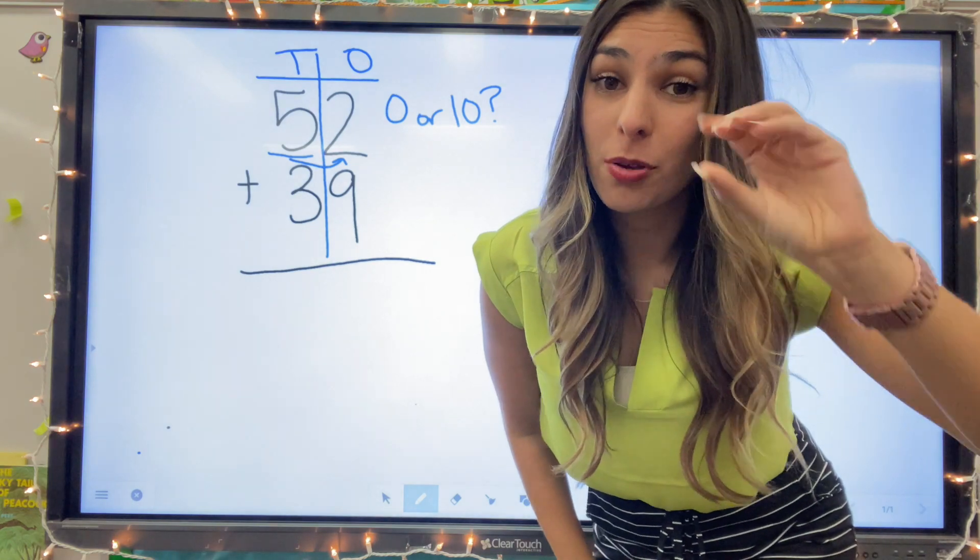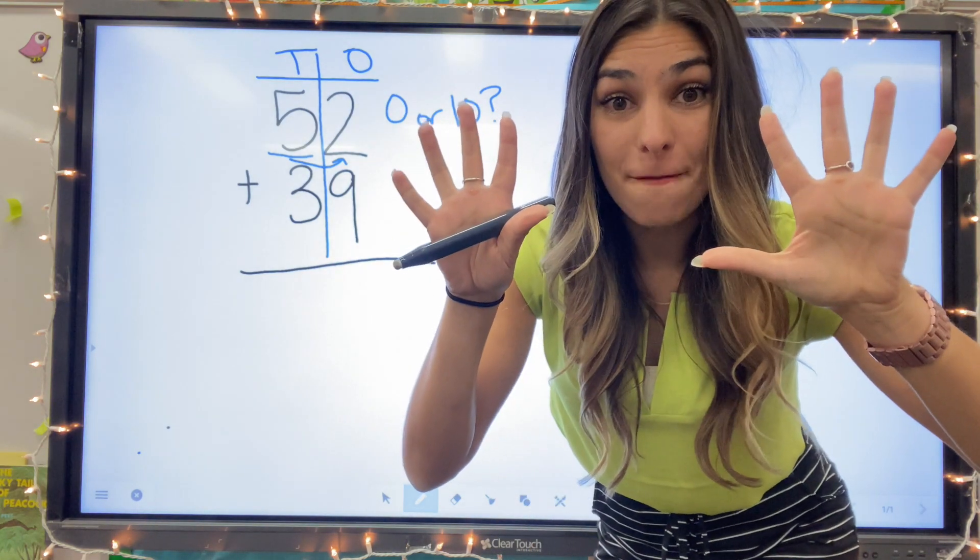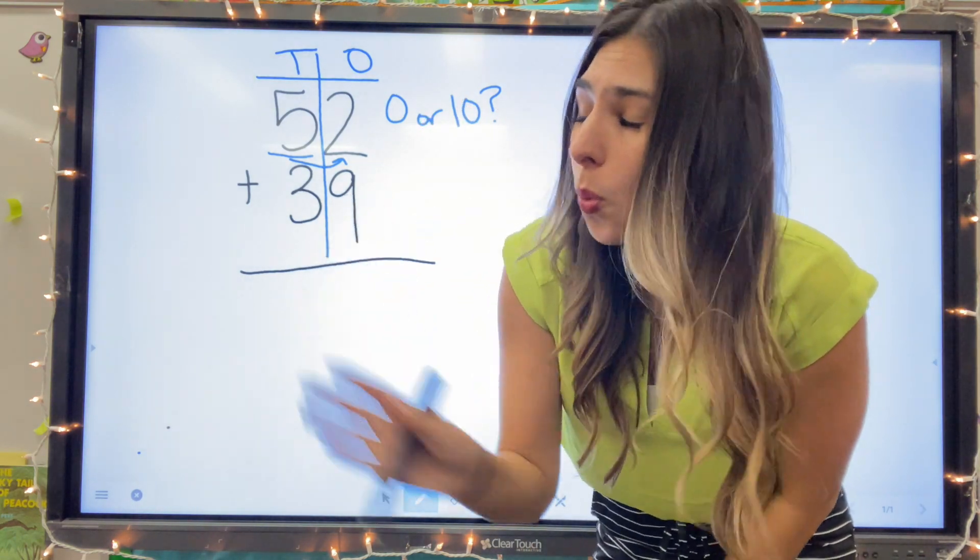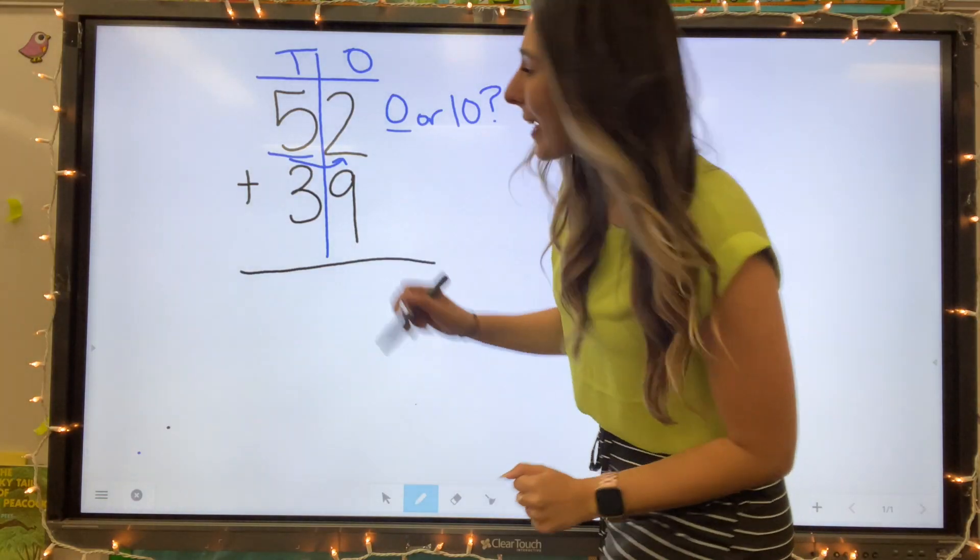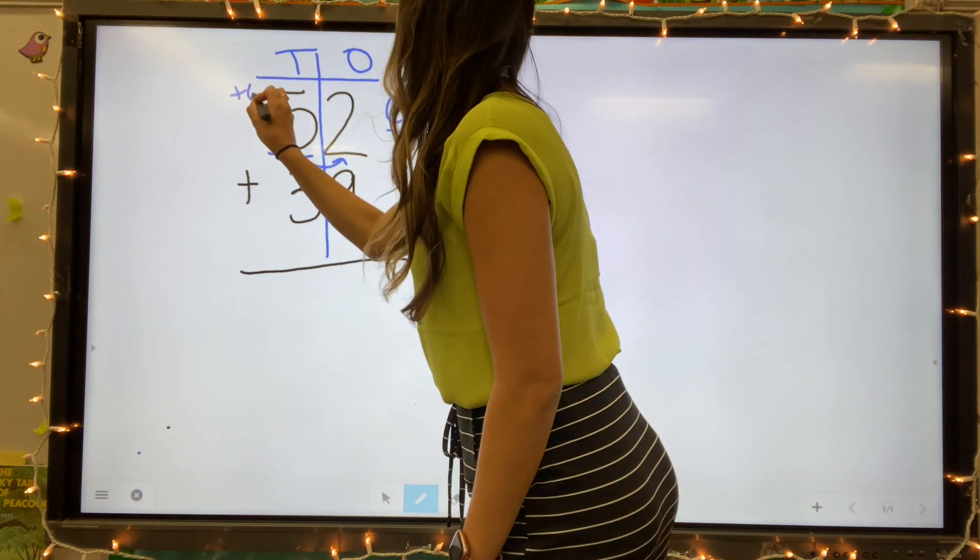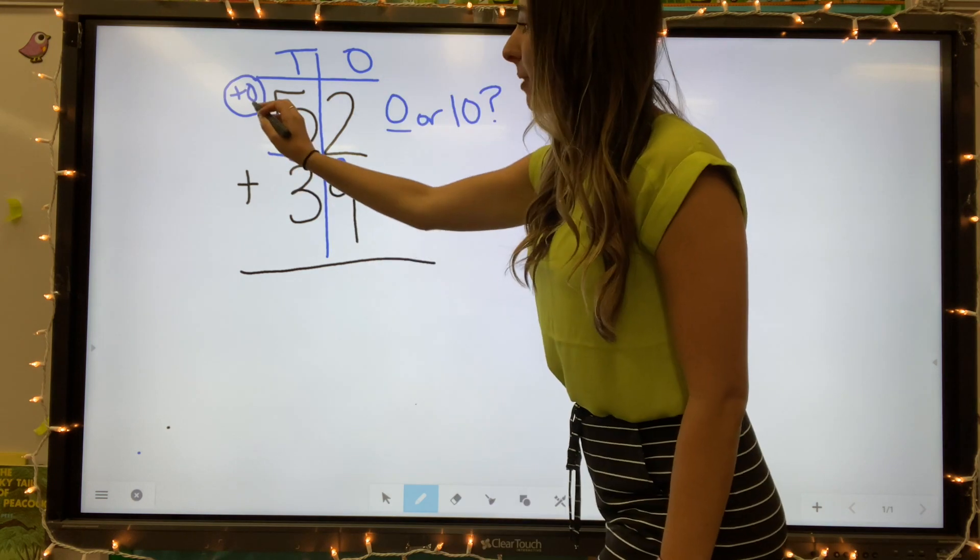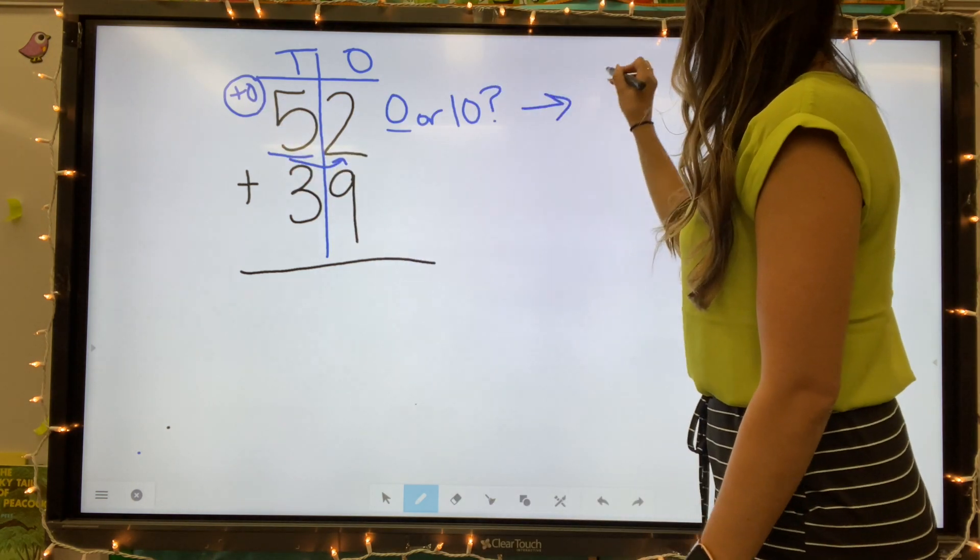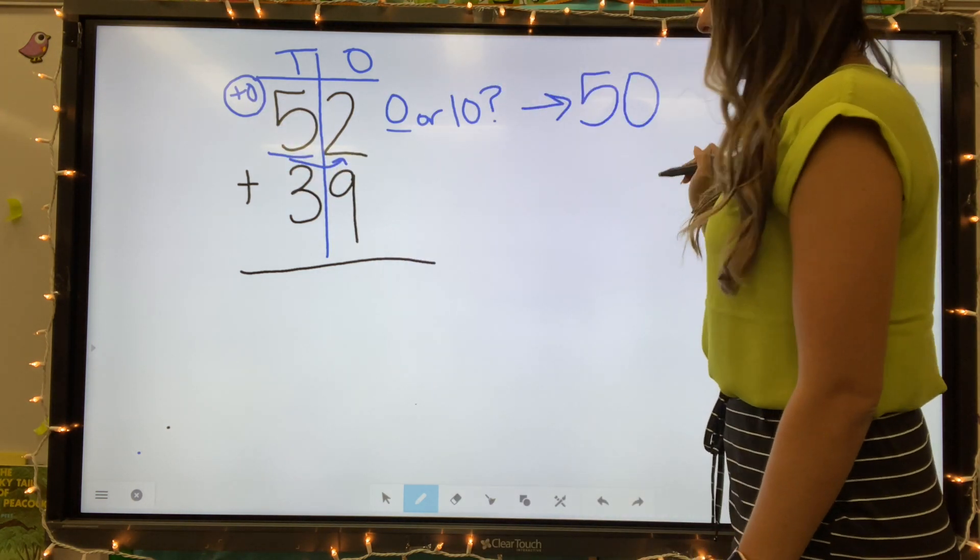So is that two closer to zero or closer to ten? That two is way closer to zero. So we're going to add zero. Five plus zero. So we're going to come over here and round 52 to 50.